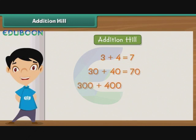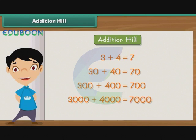What will be 300 plus 400? 300 plus 400 is equal to 700. Now you can tell the sum of 3000 and 4000 very easily. 3000 plus 4000 is equal to 7000. As this pattern gives a hill-like structure, we call it the Addition Hill.